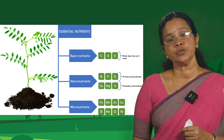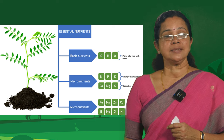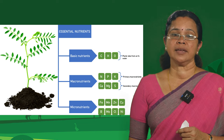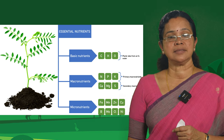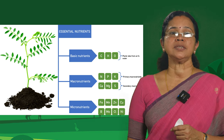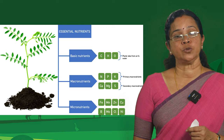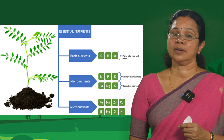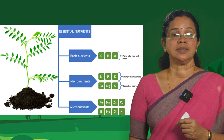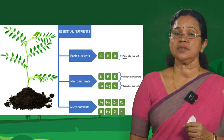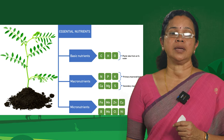Now if you see the classification of these essential nutrients, you can see three major categories. One is the basic nutrients, the second is the macronutrients, and the third is the micronutrients. Basic nutrients are the three nutrients that a crop receives from the atmosphere — carbon, hydrogen and oxygen.